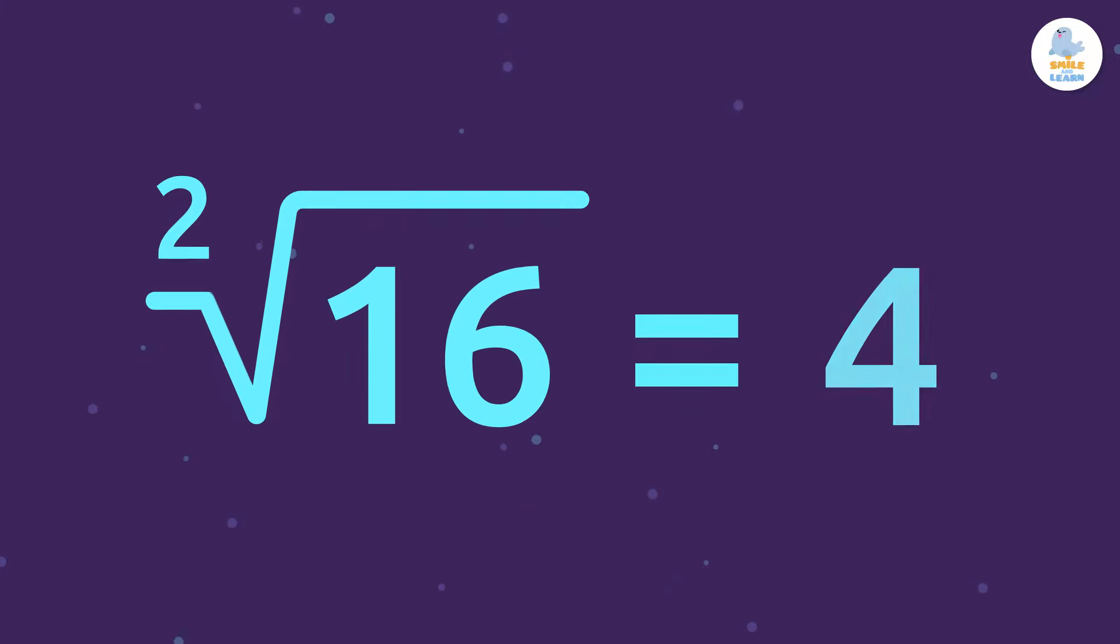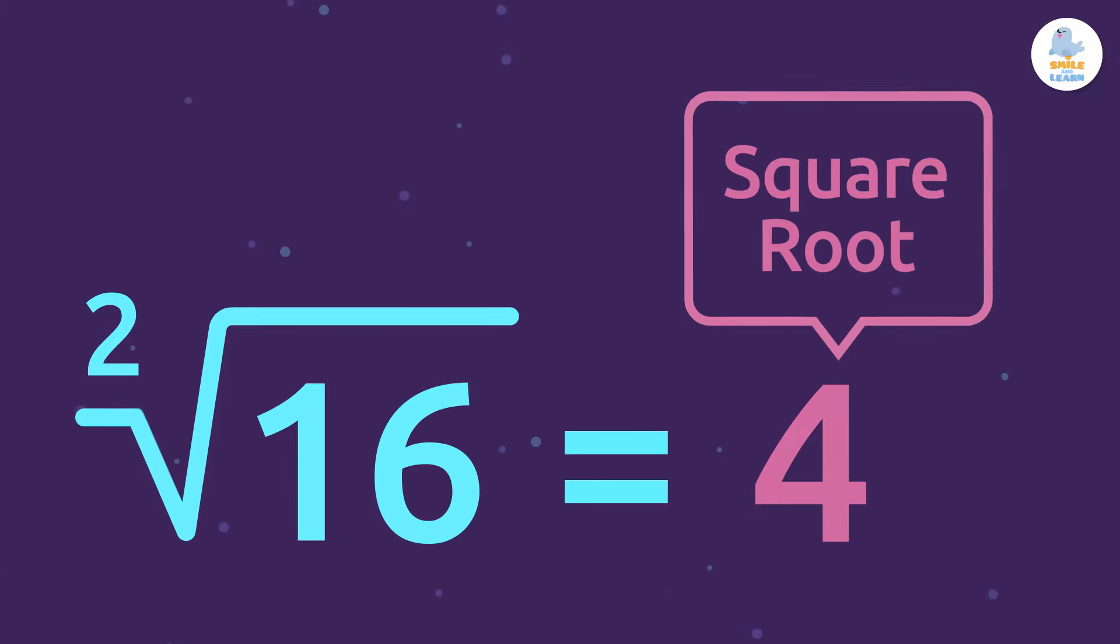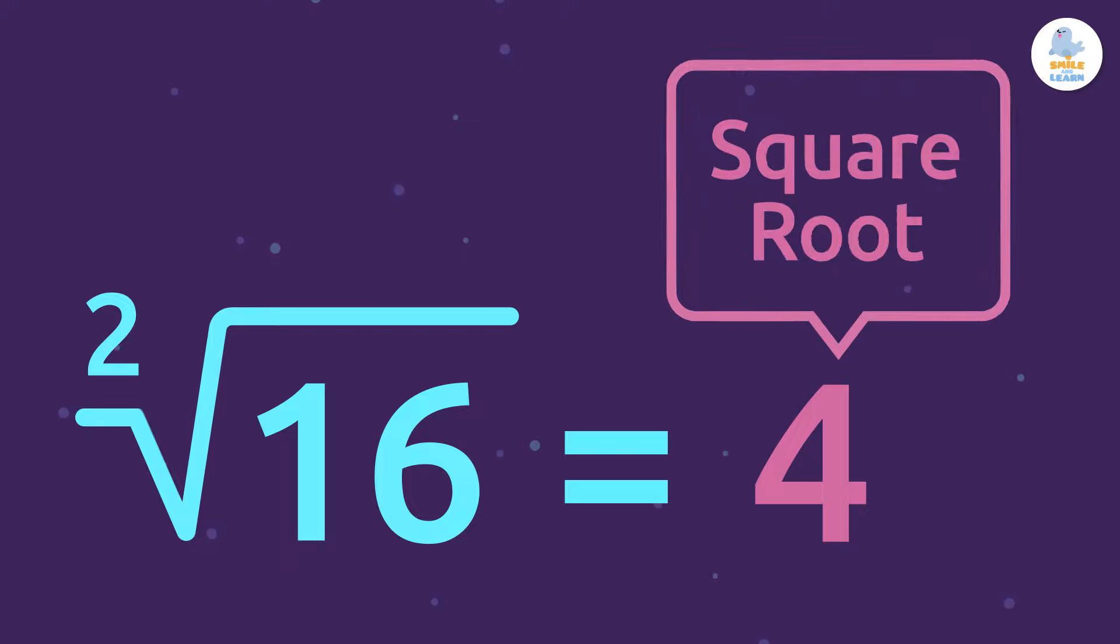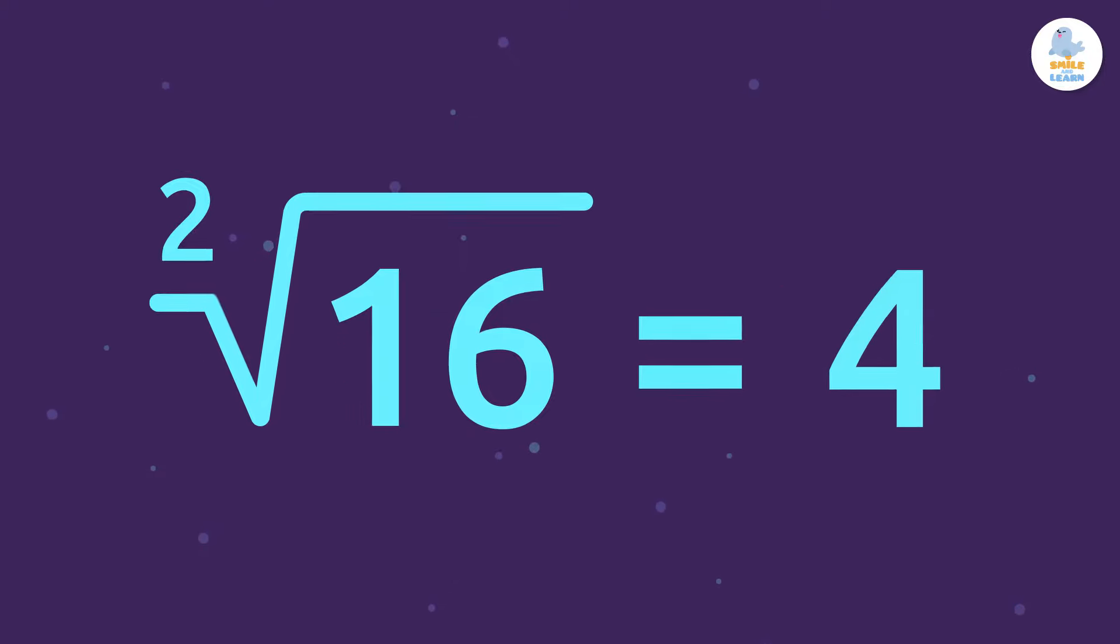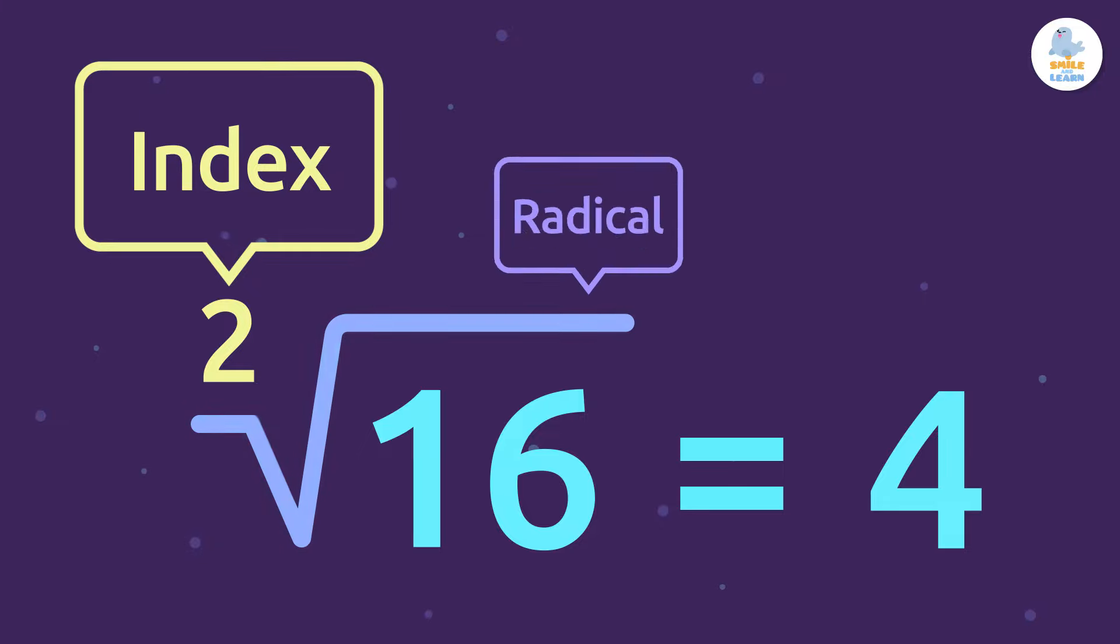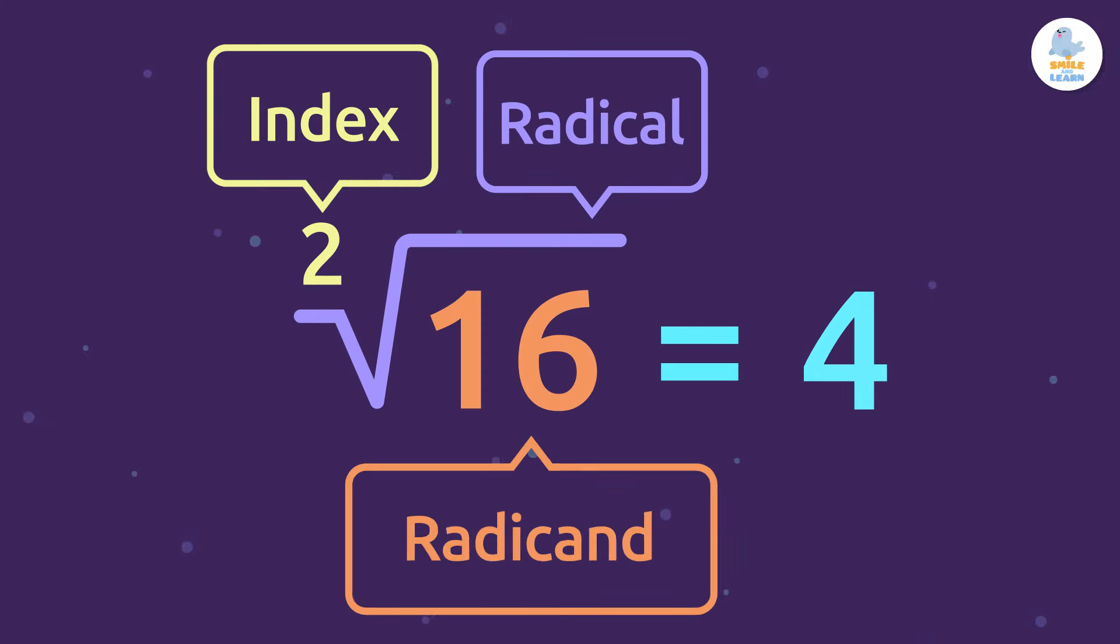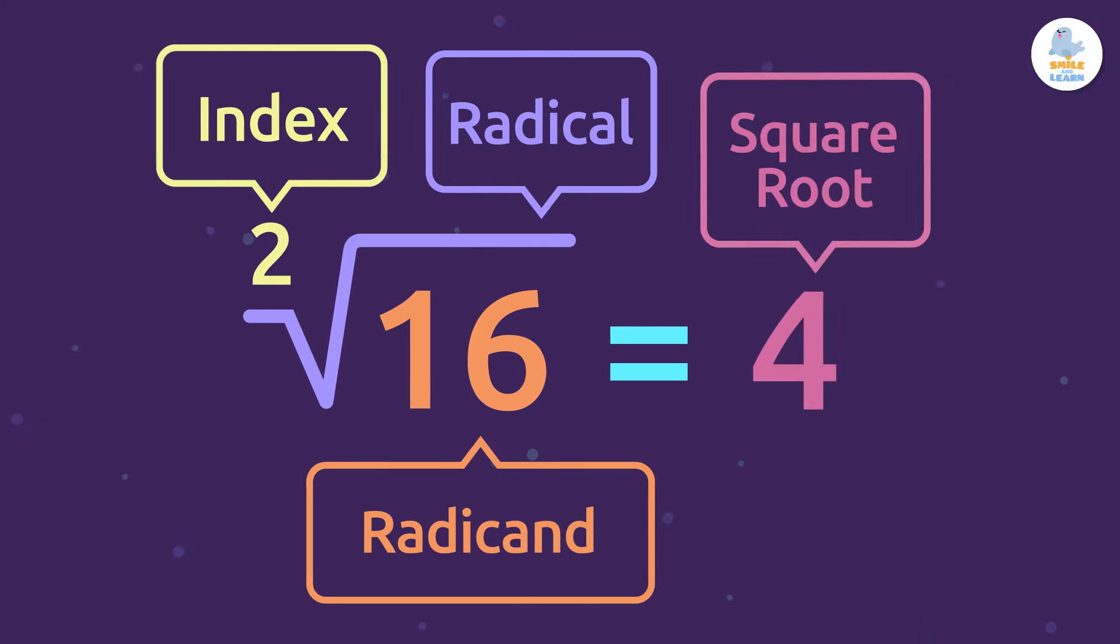Lastly, the result is called the square root, which in this case is the number 4. Great! Let's review. Index, radical, radicand, and square root. Good job!